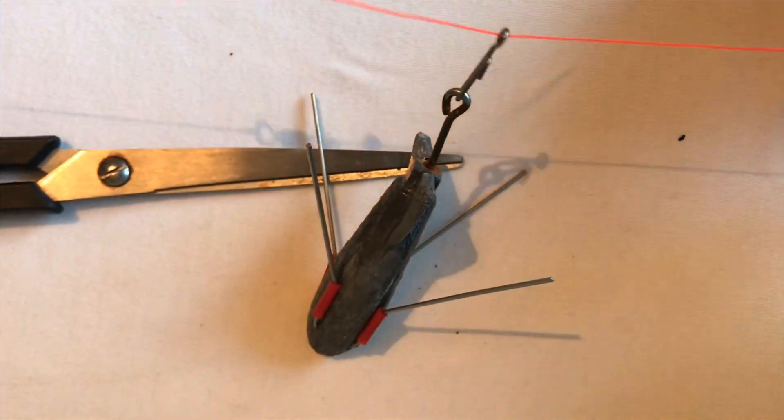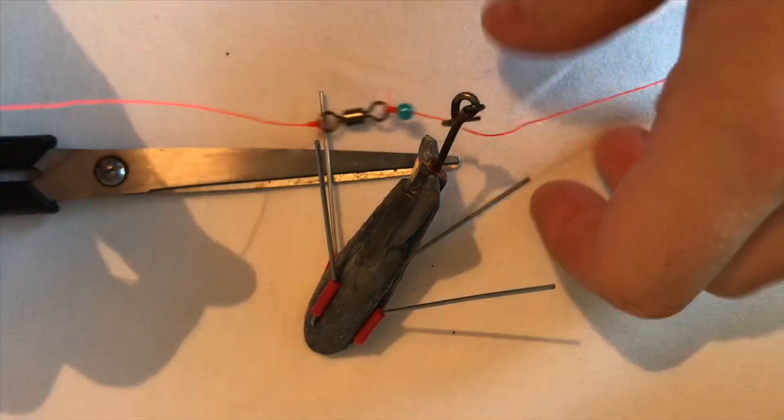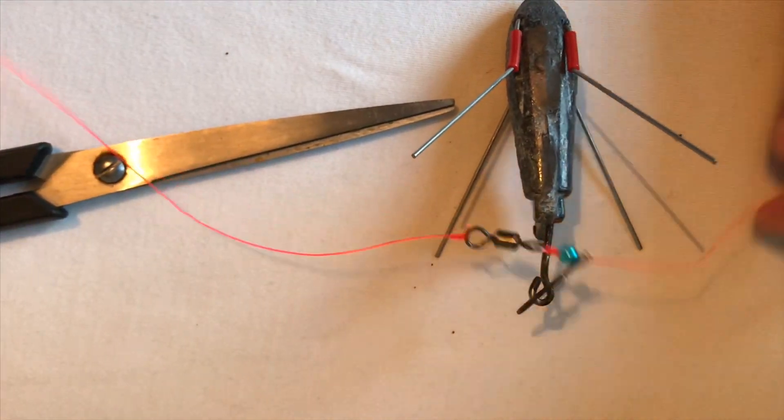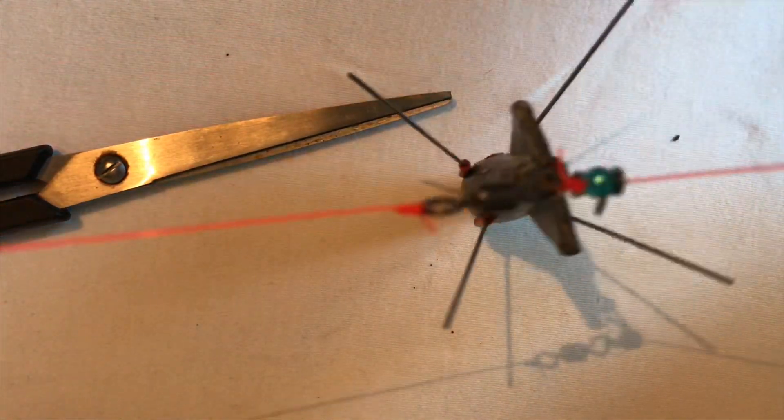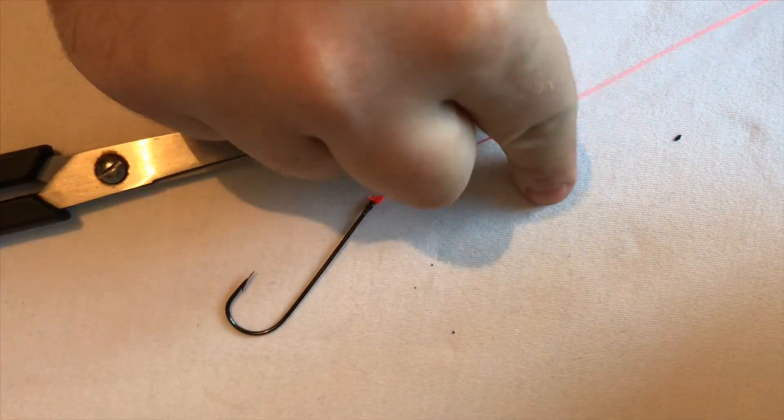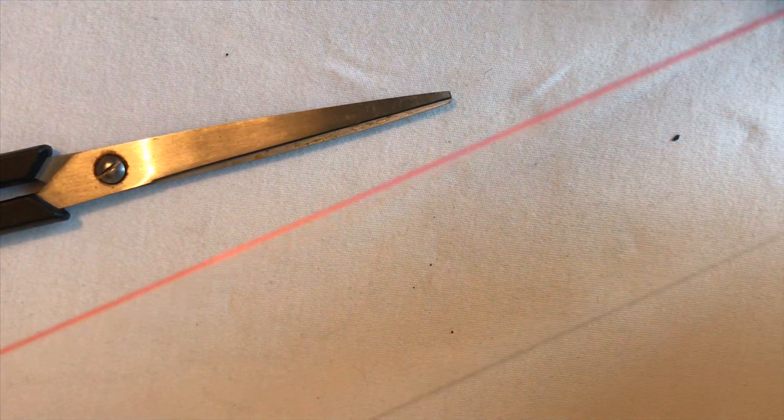There you have it. You've got the running ledger from your main line there, comes all the way down to your hook at the end. And that is how simple.